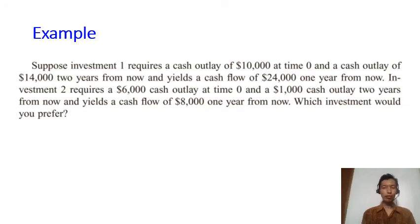So now we may use that formula to compute the NPV of these two investments in this problem. For investment one, you need to pay ten thousand dollars at time zero. And then you need to pay again fourteen thousand dollars two years from now. This investment gives you a cash flow of twenty-four thousand dollars. So you receive twenty-four thousand dollars one year from now.